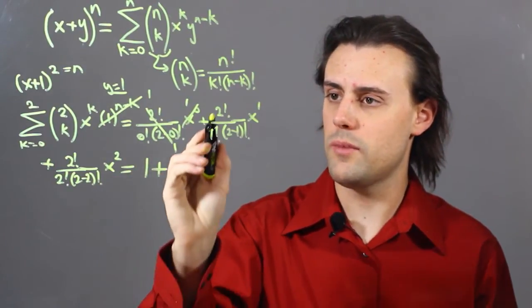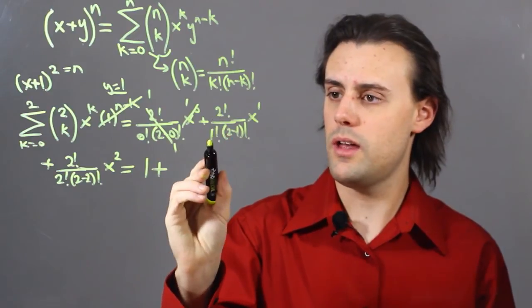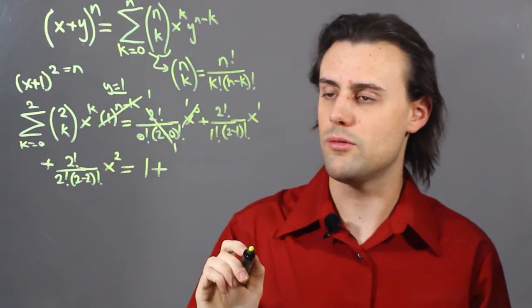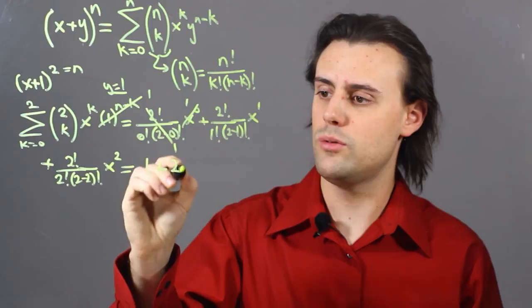For my second term, I have 2 factorial up top, and 1 times 1 is equal to 1, so I have 2 times x.